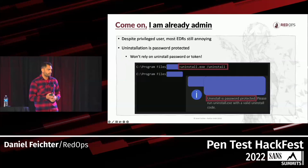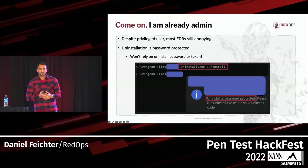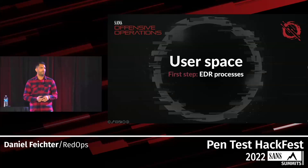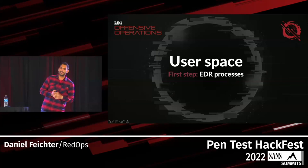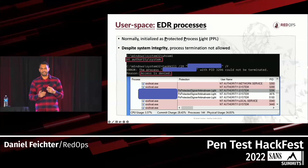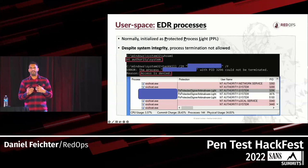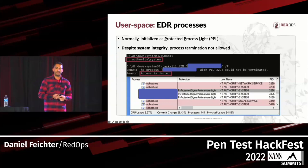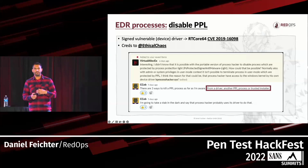If you have already achieved admin privileges, you can try to simply uninstall the product — but normally this shouldn't be possible if the blue team has done its homework, because you need an uninstall token or password. Despite having admin privileges, most well-known EDR products can still be very annoying. EDRs initialize their processes in the system session as Protected Process Light (PPL), which means that even with system integrity in user space, we are not allowed to directly terminate a PPL process. However, there are several ways to deal with PPL processes from a Red Team perspective.